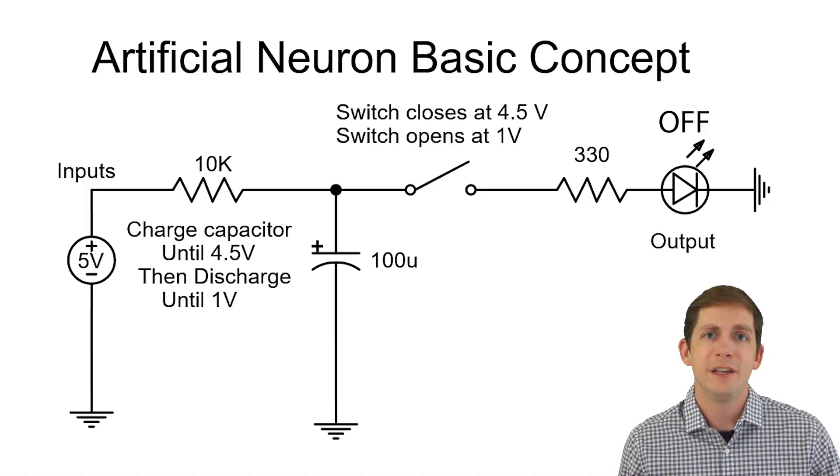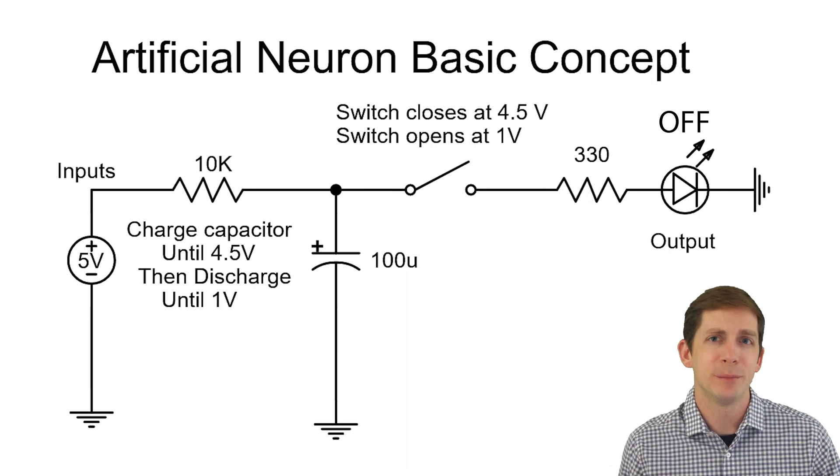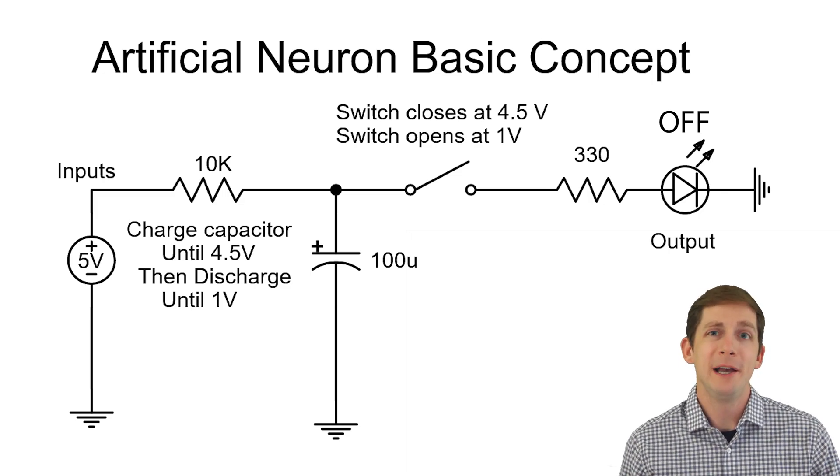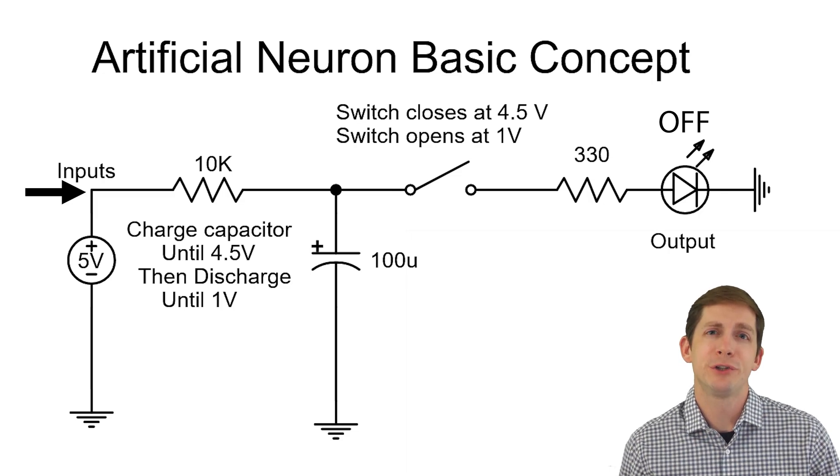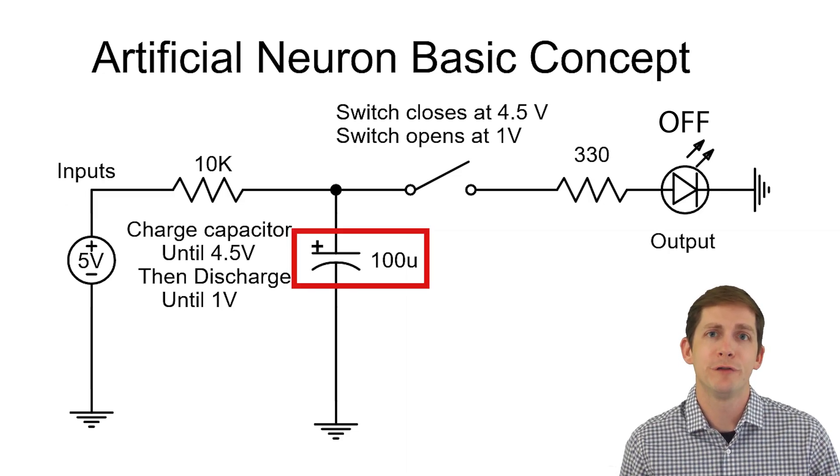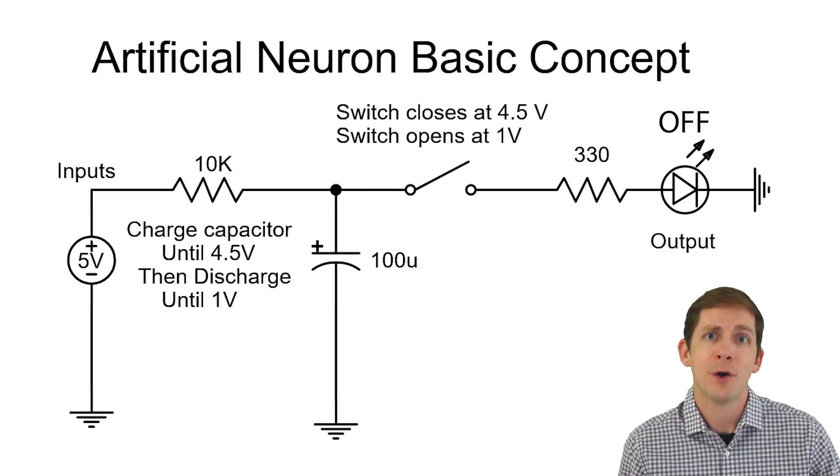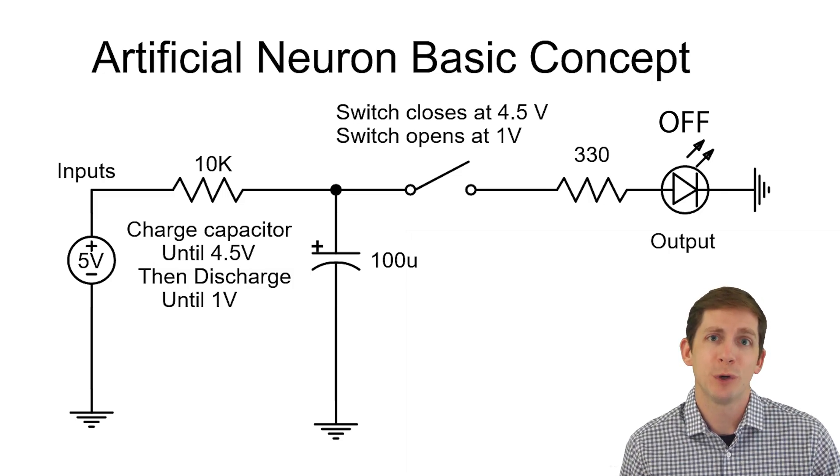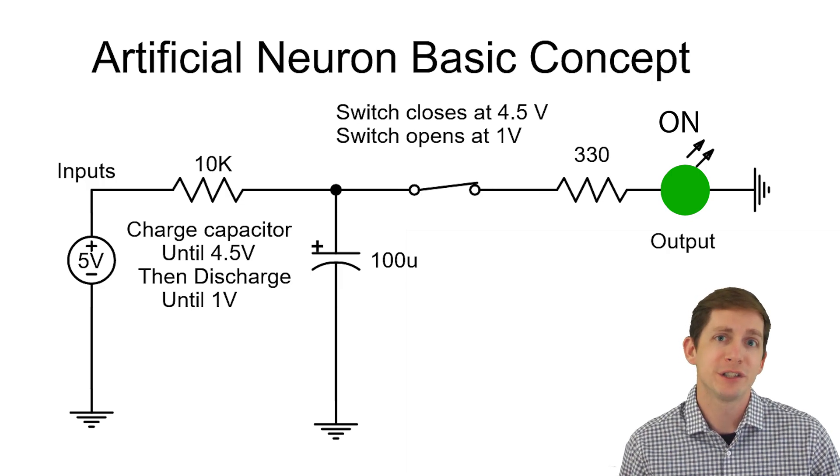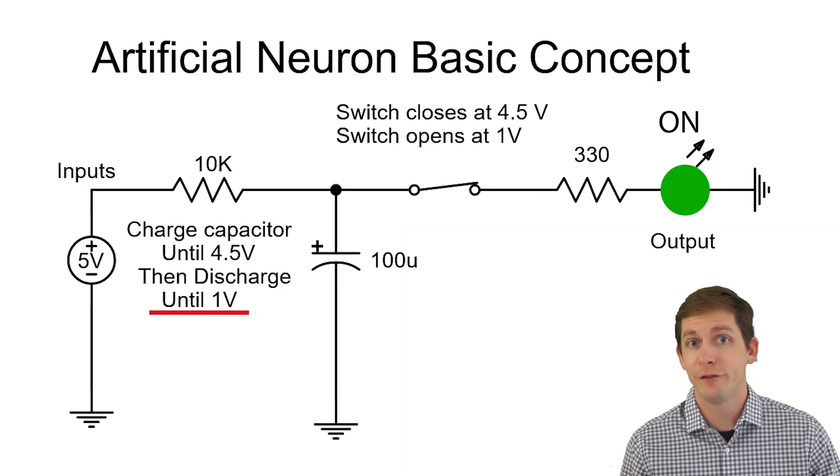Now let's talk about how to build the artificial neurons. This basic sketch is what I use to brainstorm how to build an actual artificial neuron circuit. Basically, incoming inputs need to charge a capacitor to some threshold voltage, say 4.5 volts in this case. When the threshold is reached, the switch will close and the capacitor should discharge to some lower value, say 1 volt.